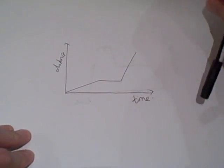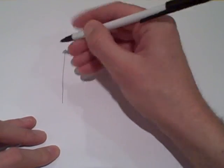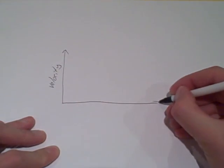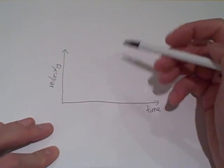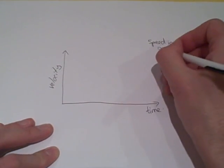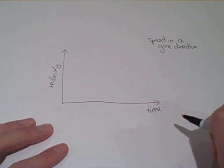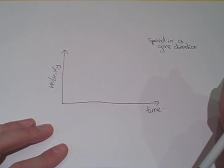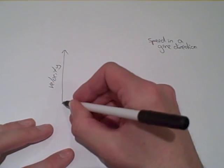Let's now look at the other kind of graph — a velocity-time graph. The first thing to remember is that velocity just means speed in a given direction. Whenever you answer a question, it's always important to check: do I have a velocity-time graph or a distance-time graph? Let's consider a simple velocity-time graph.